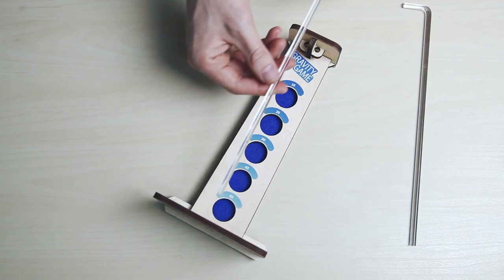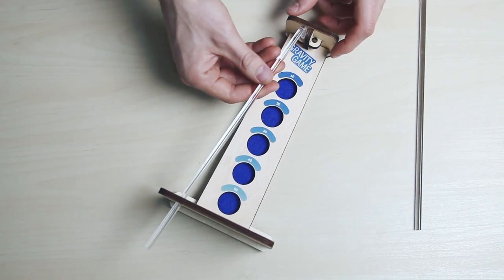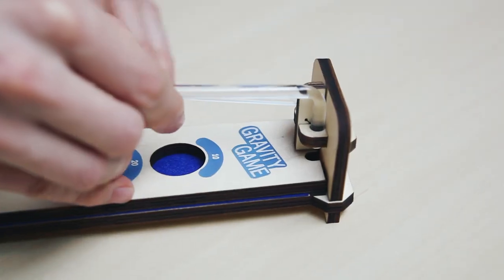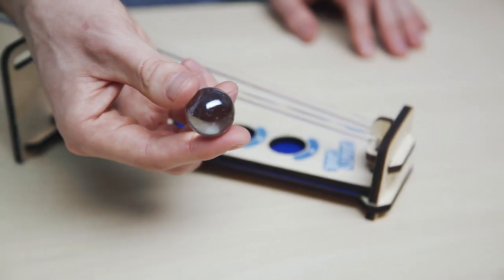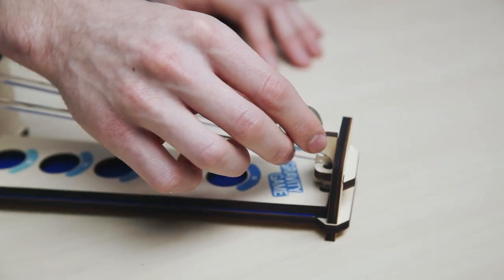Attach the acrylic rods by first sliding one end through the slit in the large side. Then press the other side through the two small holes on the narrow end. Grab your ball and you've completed your gravity game construction.